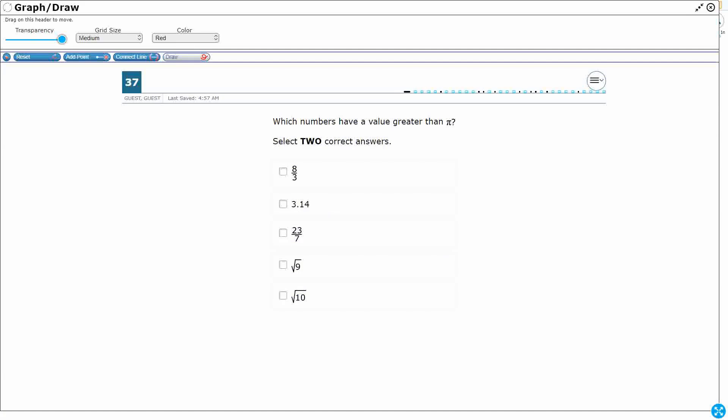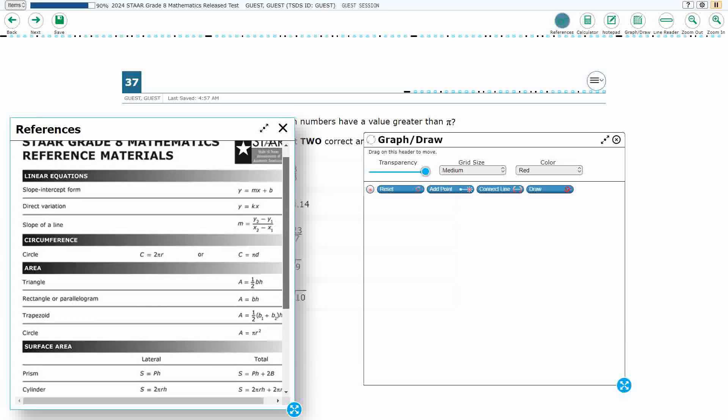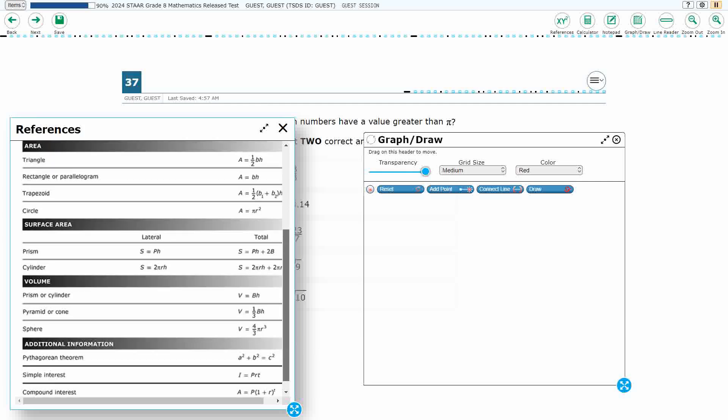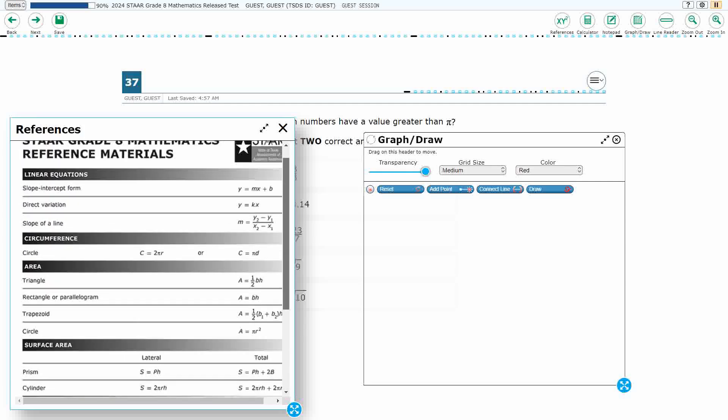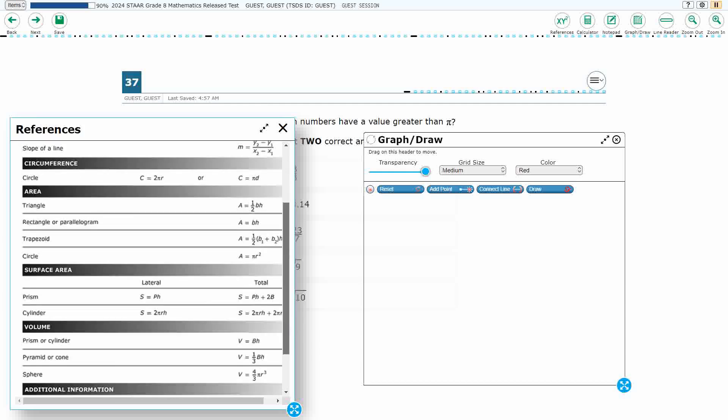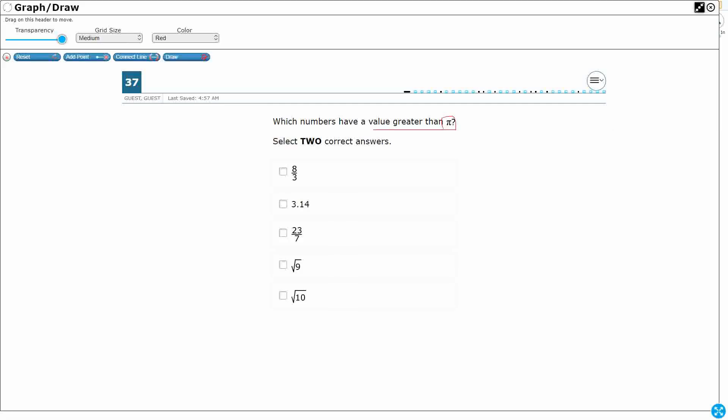We have here a value greater than pi. So what do we know about pi? On our reference material, do we have anything about the equivalency of pi? No, in previous years we've had an equivalency of about 3.14, but we don't see it here on the 8th grade materials. So that's what most of us remember, so let's write that.